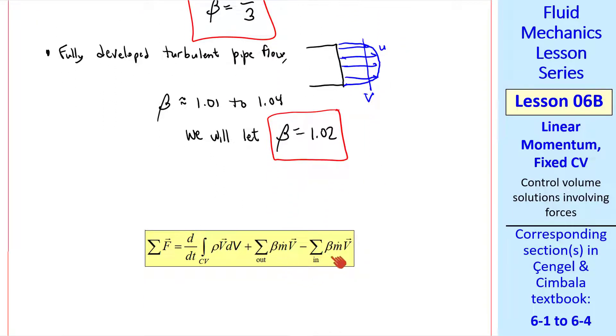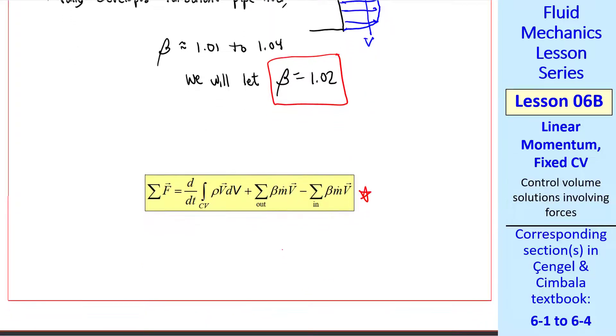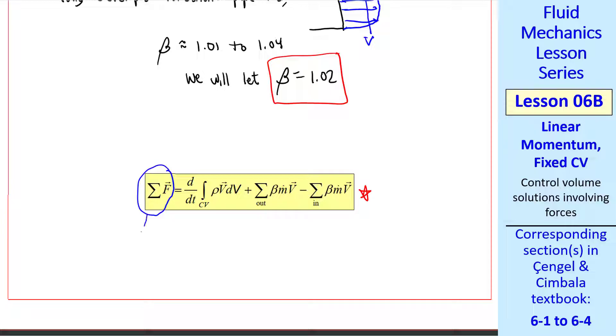When we include beta, we simply put it in as a correction factor in these inlet and outlet terms. This is a more useful version of the momentum equation, but we're not quite ready for examples yet because we haven't dealt with the force term yet.